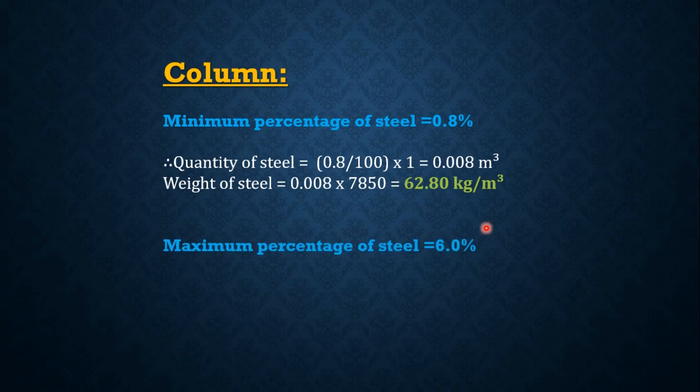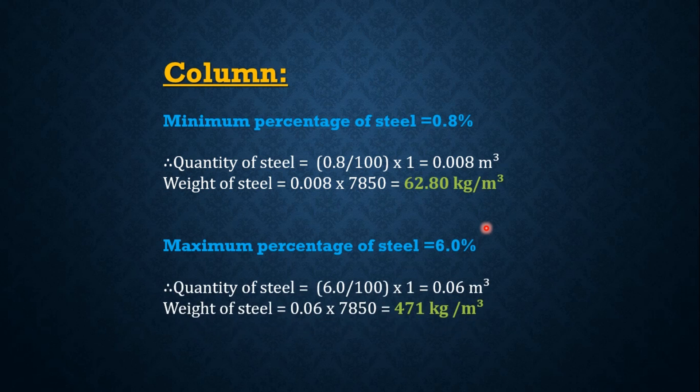The maximum percentage of steel required in a column is 6.0%. Therefore, the quantity of steel equals 6 divided by 100 multiplied by 1, which gives 0.06, and the weight of the steel equals 0.06 multiplied by 7850, which is equal to 471 kg per meter cube. However, we restrict the maximum percentage of steel in a column to 4% only, because beyond 4% it becomes difficult to pour and compact the concrete. If you add admixtures, then you can go up to 6%, because admixtures improve the workability of the concrete.